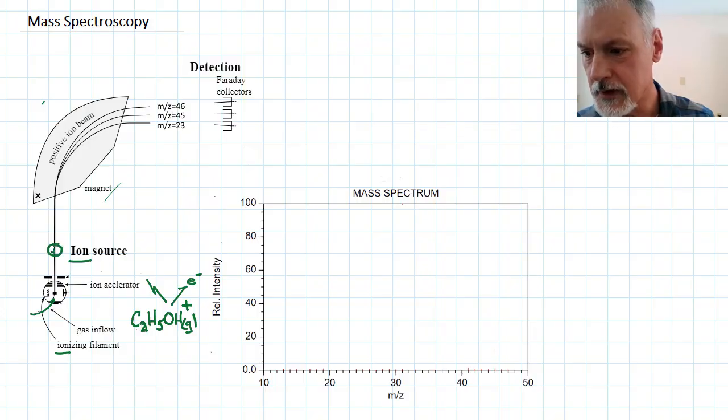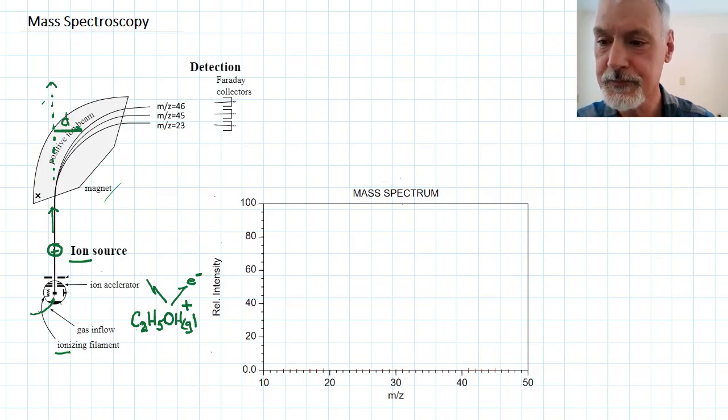That ion that's now positively charged makes its way up towards a magnetic field. If that magnetic field wasn't there, the particle would just continue on in its straight course in this direction. However, the presence of the magnetic field causes it to bend off course or deflect. The amount of deflection depends on a couple of things. One is the smaller the mass, it's easier to deflect, so our amount of deflection goes up.